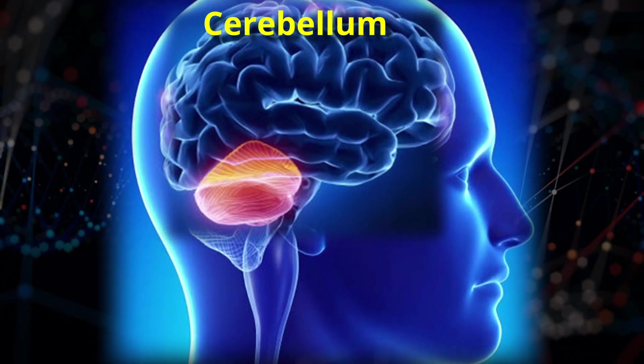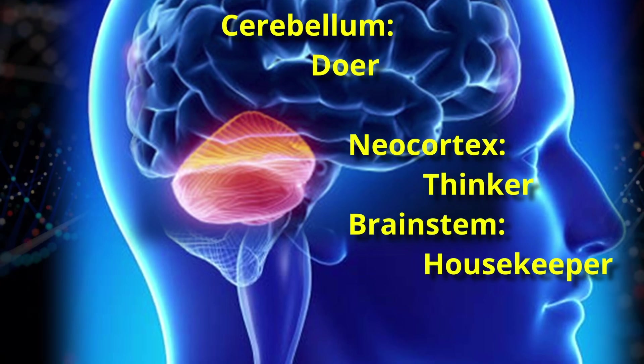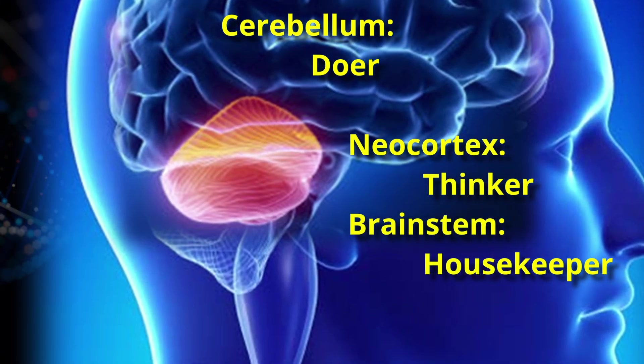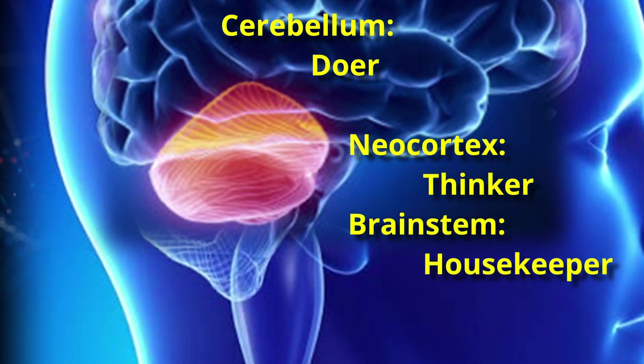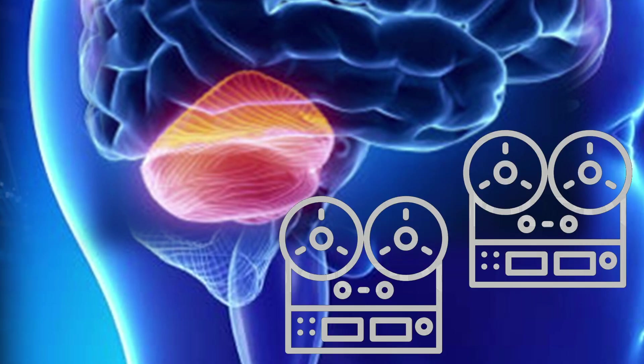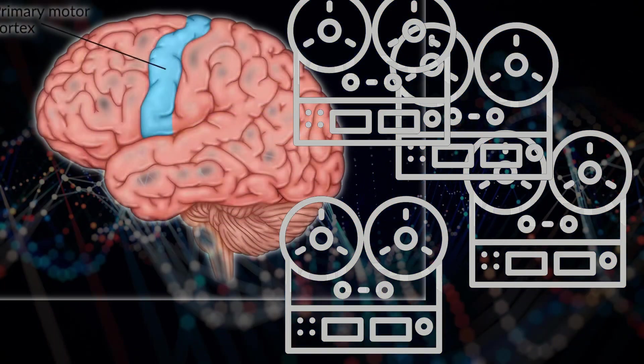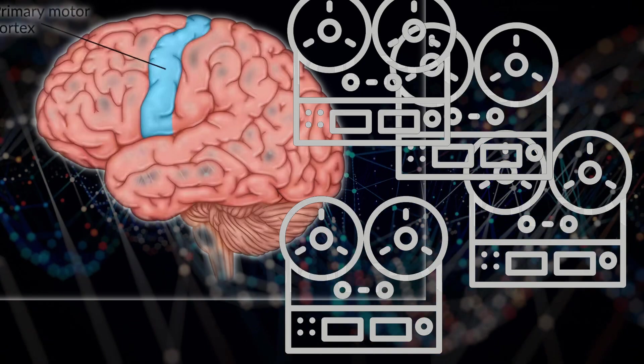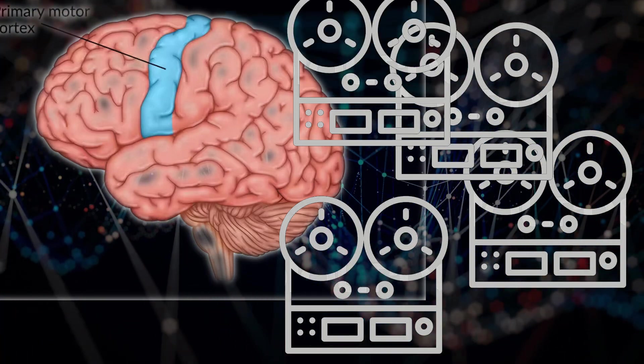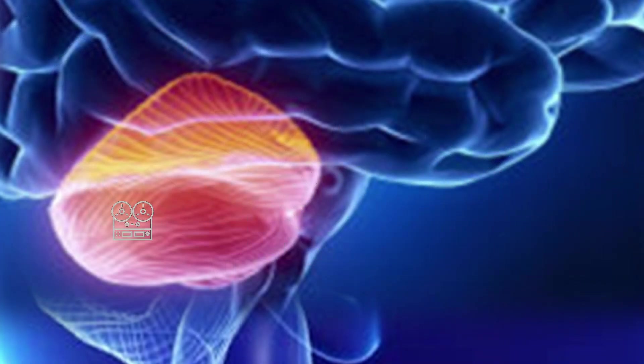This is where the cerebellum comes in. If the neocortex is the thinker, the cerebellum is the doer. Its job is speed and efficiency. You can think of the cerebellum as a set of tape recorders. Whenever you perform an action, the cerebellum pays attention and records motor signals coming from your neocortex. If you repeat an action enough times, the cerebellum saves the recording and strengthens it with each repetition.